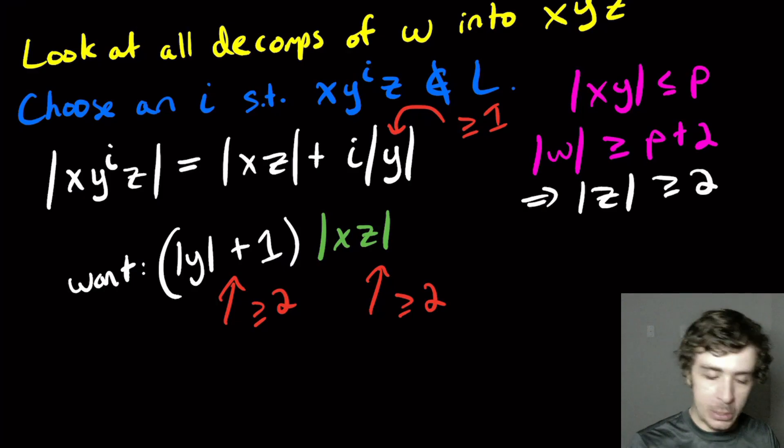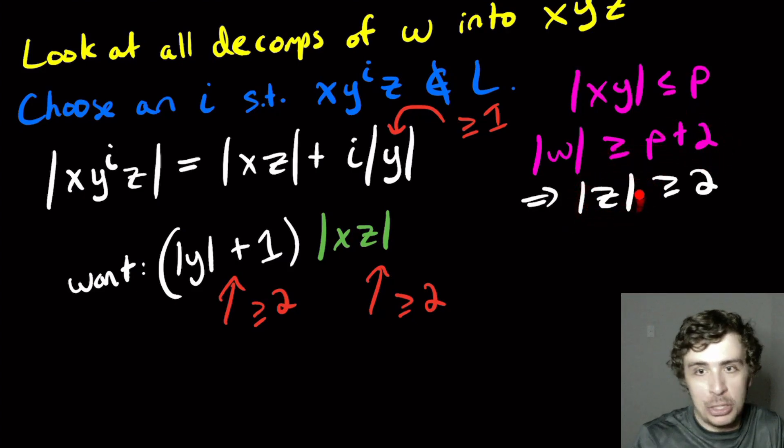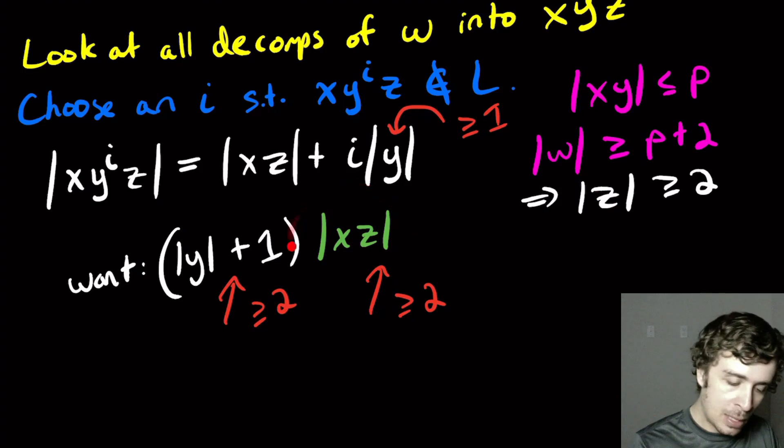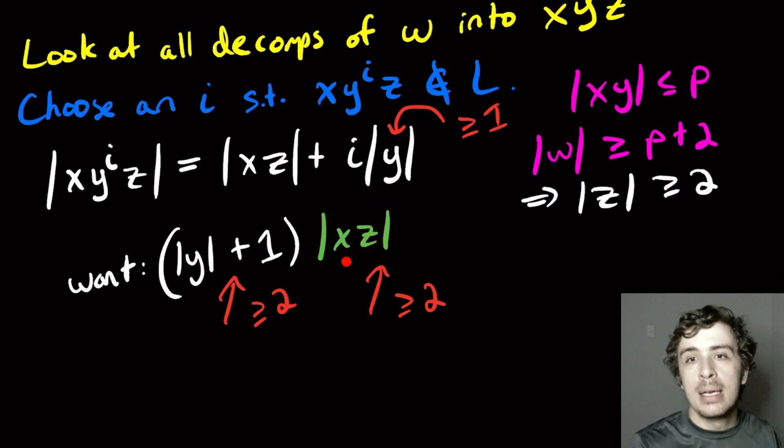We know that to be true because even if xy took all P characters at the beginning, there's still two more left. And z is the only thing left in the string to take any characters. So the length of z itself is at least two. X may be empty maybe not, but it doesn't matter, it's at least two.